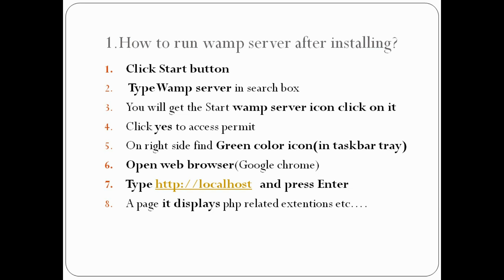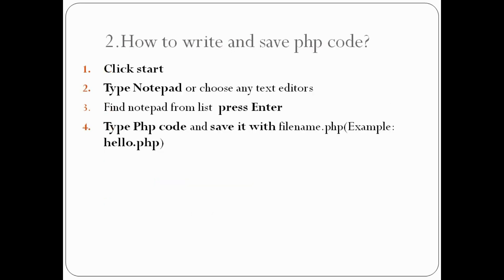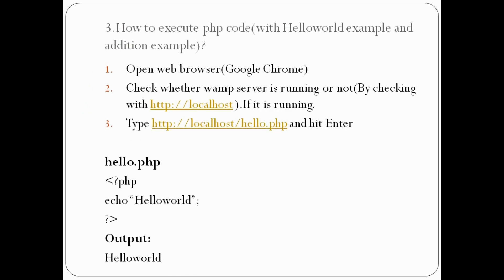Next, how to write and save PHP code. Click Start, type Notepad or choose any text editor, find Notepad and press Enter. Then type your PHP code - either a hello world example or an addition example - and save it with the file name 'hello.php'.